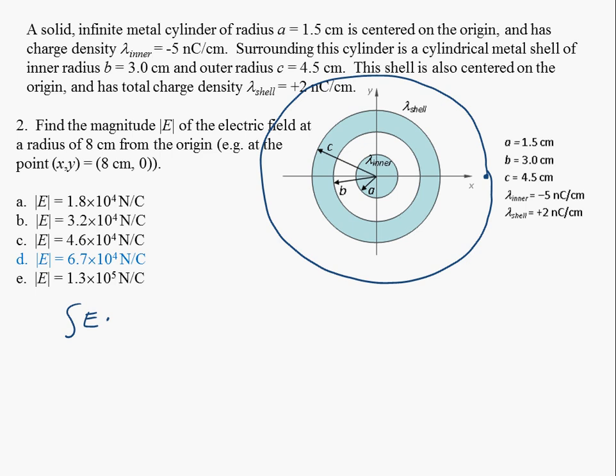The integral of the electric field dotted into the area is equal to the charge enclosed divided by epsilon naught. In this case here, I've chosen my Gaussian surface such that the electric field is constant everywhere on the barrel. So I can pull that outside, just integral of dA.